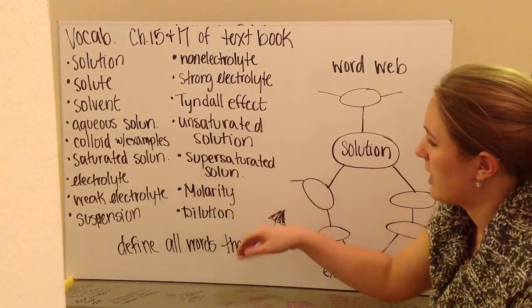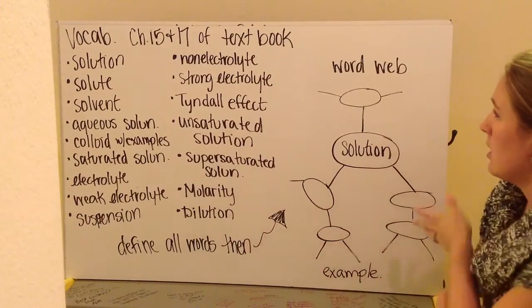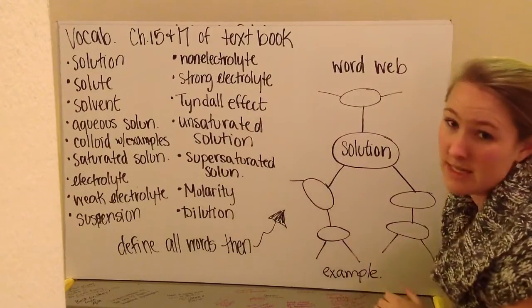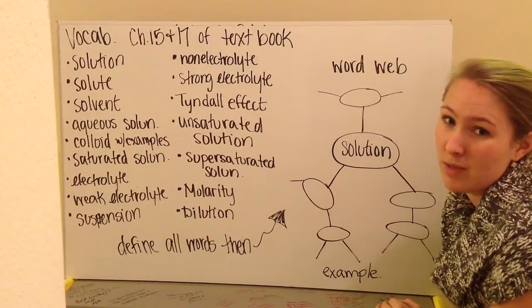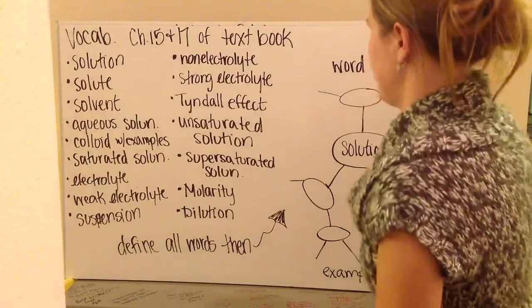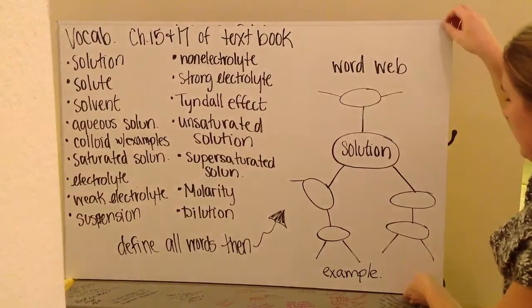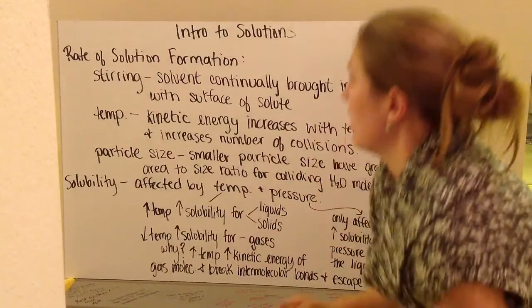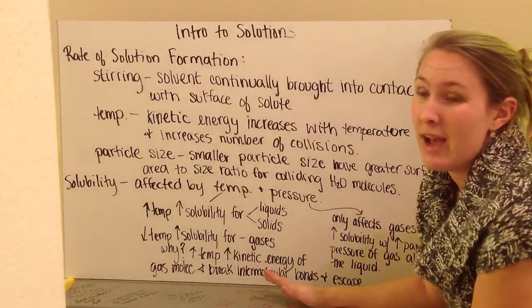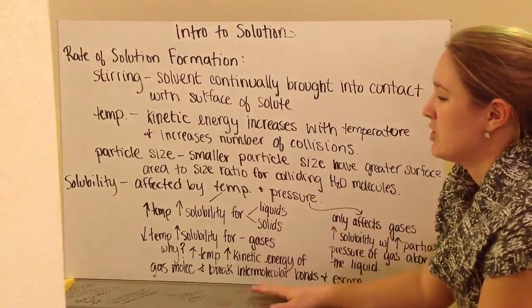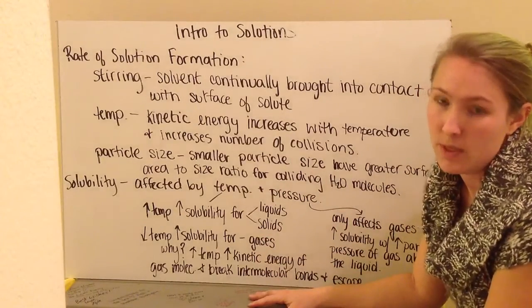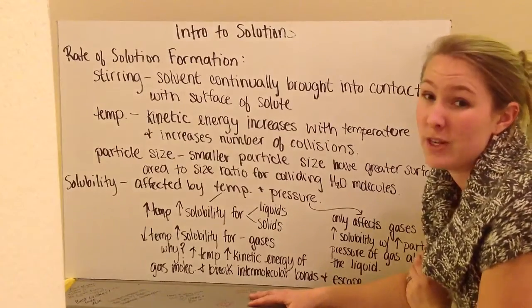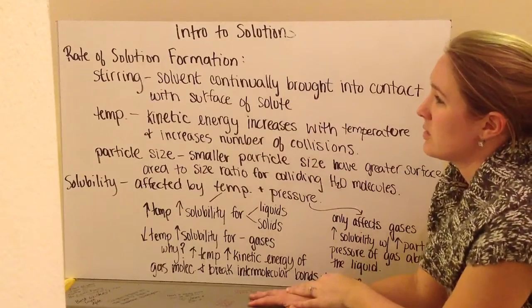So like I said, you're going to define all these words. Once you've done that, you've gone ahead and made your word web. All these words are going to come out of chapters 15 and 17, just taking the definitions from your textbook and making sure you understand them. Okay, at the top of that worksheet, if you have it, I'm going to ask you a couple of questions. Again, they come straight out of the textbook. Some other information to help you with those questions and important information for this unit. So, quick introduction to solutions.